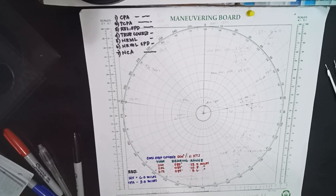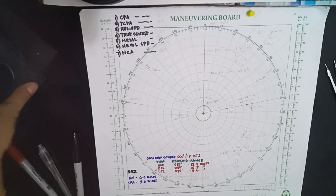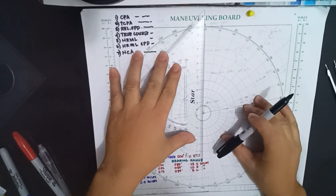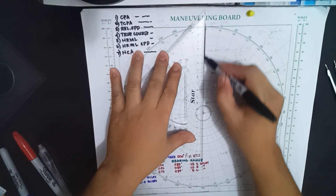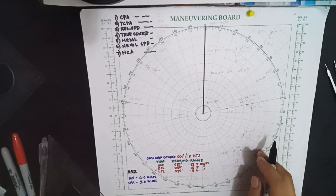Good day to everyone. The topic I will share today is how to find the course to alter in order to have a good two nautical miles CPA after you observe a zero CPA from the target, like what we have on our sample exercise. Our own ship course is 000 degrees with 11 knots.